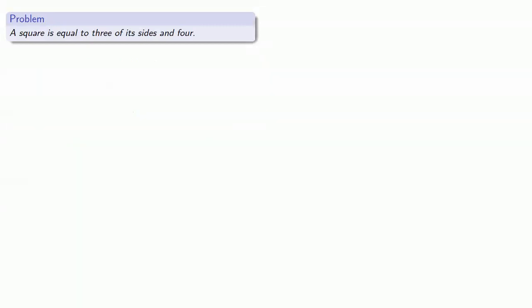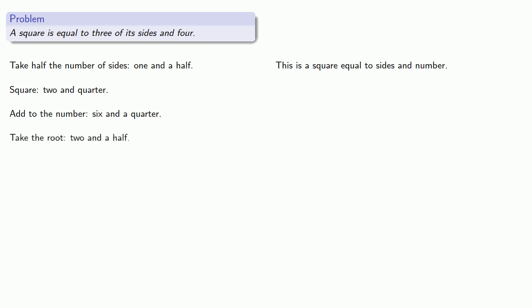How about our third case? A square is equal to 3 of its sides and 4. So here we have square equal to sides and number. Al-Khwarizmi gives the procedure: take half the number of sides (1 and a half), square (2 and a quarter), add to the number (6 and a quarter), take the root (2 and a half), and finally add to half the sides for the solution.